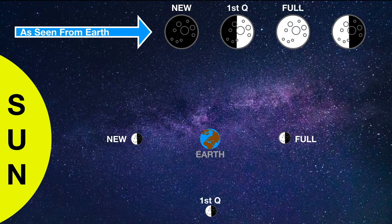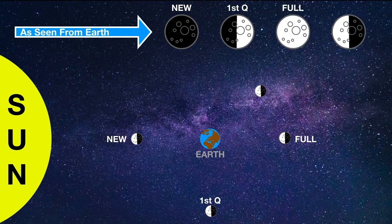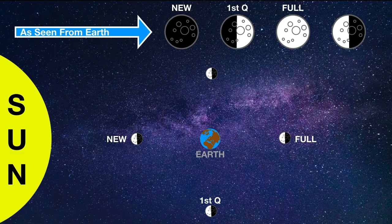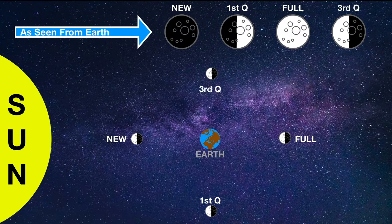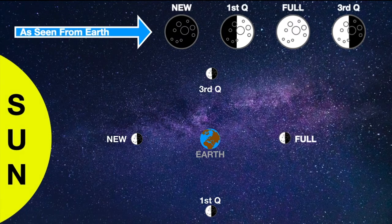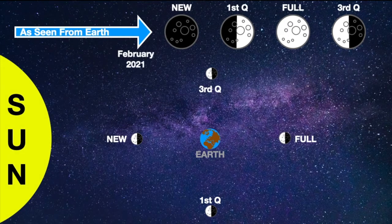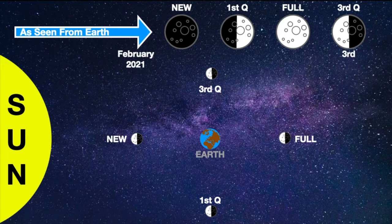The Sun, Earth, and moon once again form a 90 degree angle, and the moon is said to be in its third quarter. This month the lunar phases can be seen on the following dates.